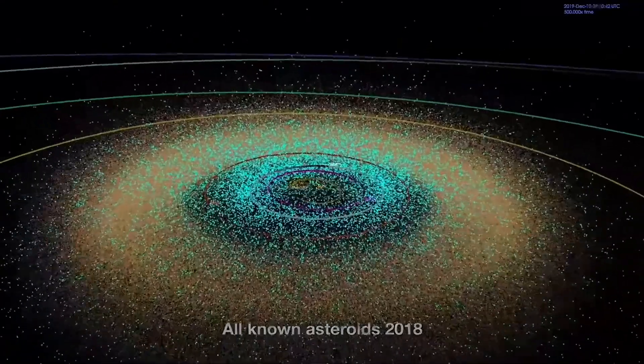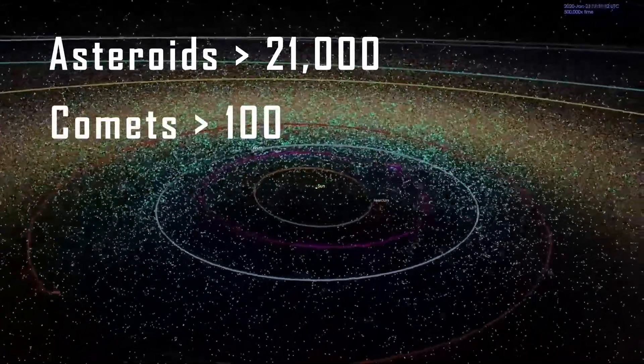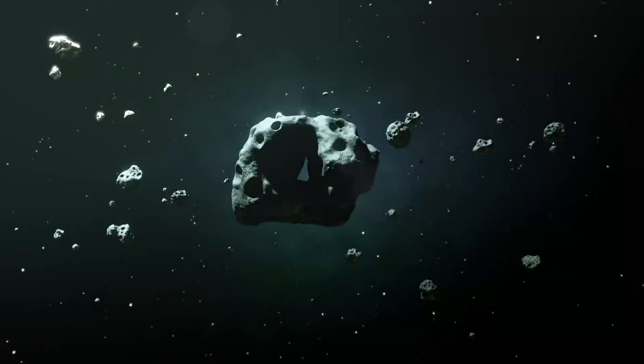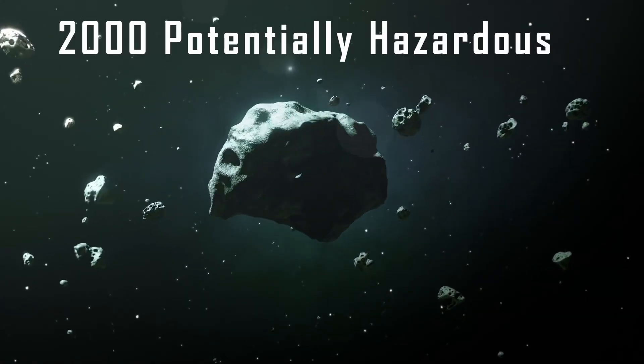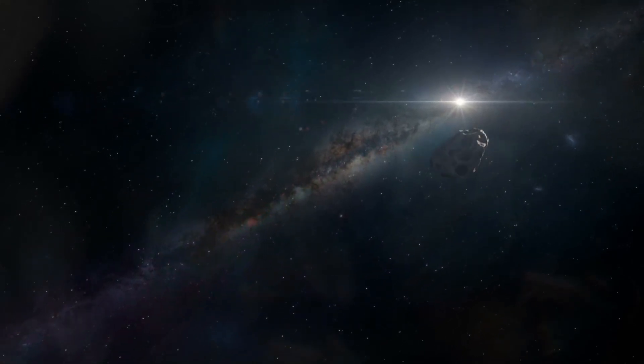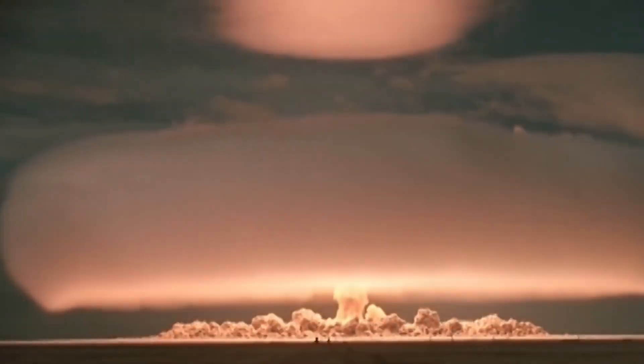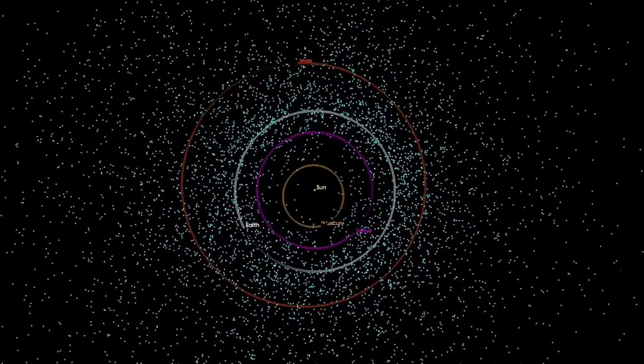So far, NASA has classified more than 21,000 asteroids and more than 100 comets as near-Earth objects. Of that group, about 2,000 are considered potentially hazardous, meaning they have orbits within 4.5 million miles of Earth and are big enough to cause massive devastation on impact. But scientists have identified only an estimated 40% of near-Earth objects.